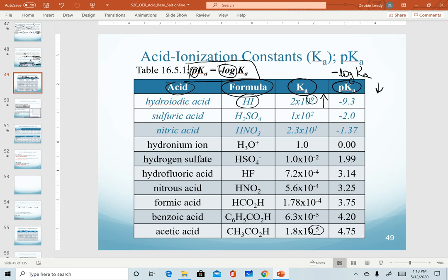Has a value of 10 to the ninth for Ka and is a negative 9.3 for pKa. As we go down to acetic acid at the very bottom, 1.8 times 10 to the minus 5, and that has a value of 4.75, the largest value in this table.